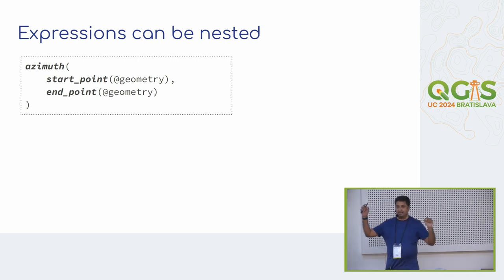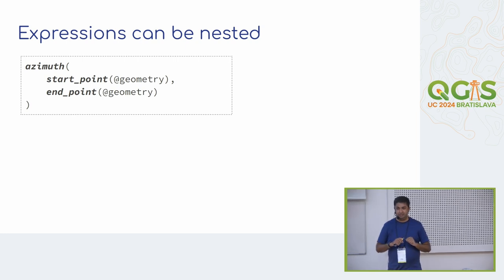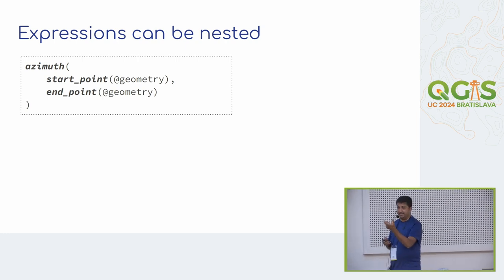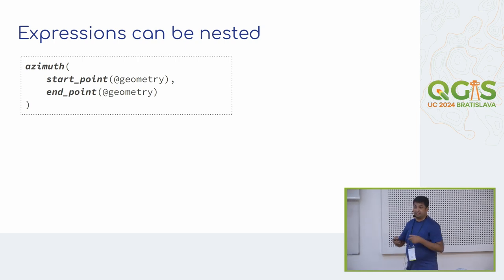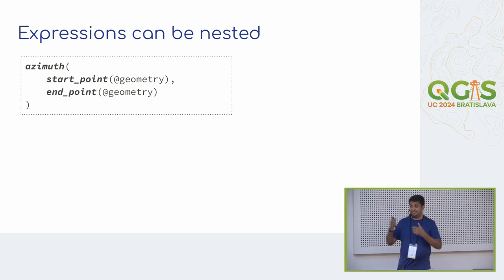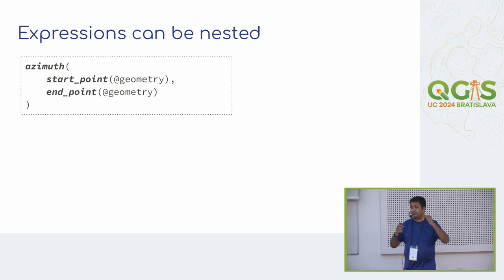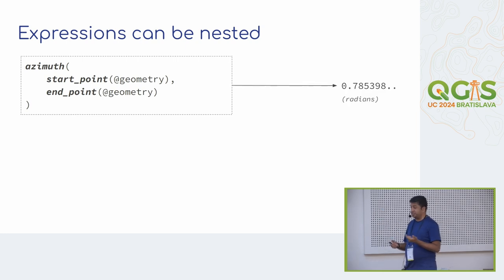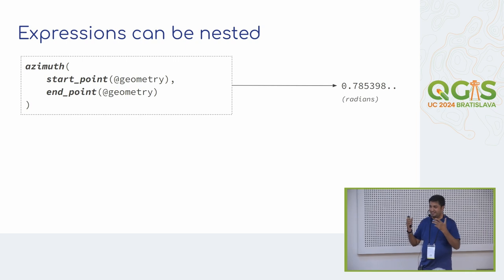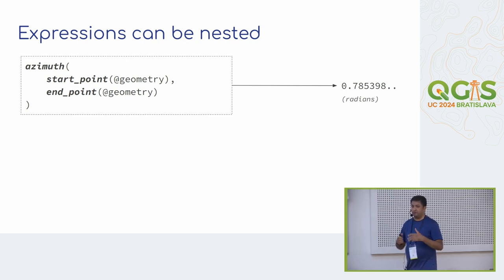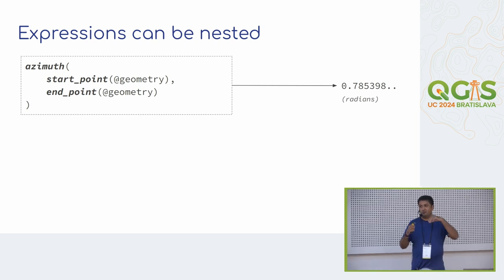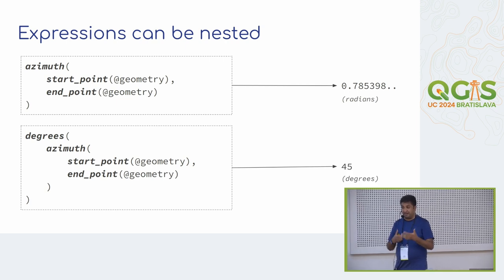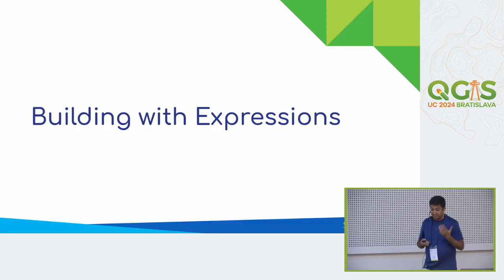The key thing about expressions, and what really gives them power, is that you can have expressions within expressions within expressions — you can layer them and build something more complex. For example, if you want to calculate the azimuth of a line, we have start_point() and end_point() functions. The azimuth() function takes those two points and gives you the azimuth. Since the documentation says the output is in radians, you can wrap the whole thing and convert it to degrees. That's what really gives you the power.